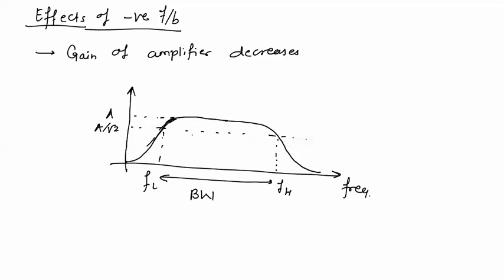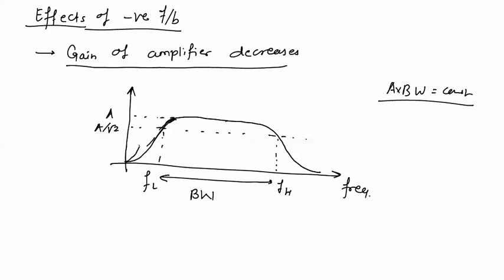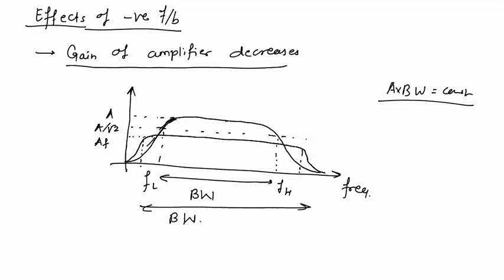For an amplifier, the gain-bandwidth product is always constant. When we apply negative feedback, the gain decreases, so we get a lower maximum gain with feedback but the two cutoff frequencies shift outward giving a new, wider bandwidth. As gain decreases, bandwidth increases — so negative feedback decreases gain but increases bandwidth.